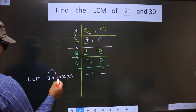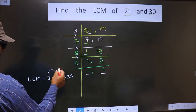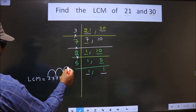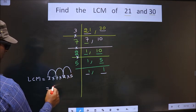3 times 7 is 21, 21 times 2 is 42, 42 times 5 is 210.